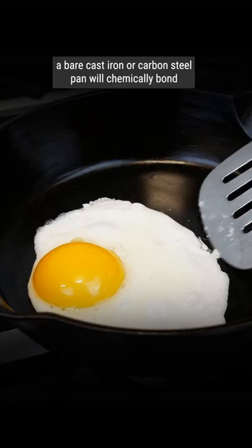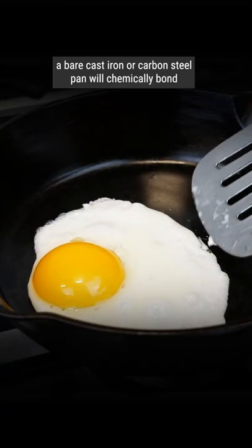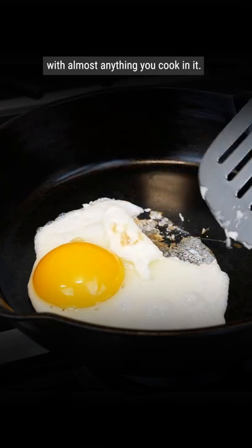Because they're mostly just iron, a bare cast iron or carbon steel pan will chemically bond with almost anything you cook in it.